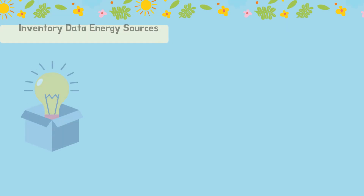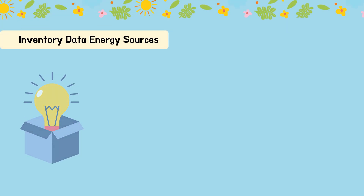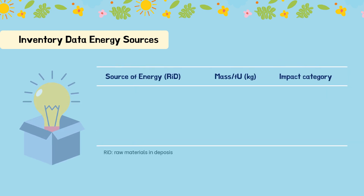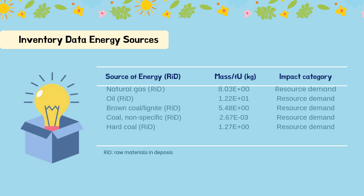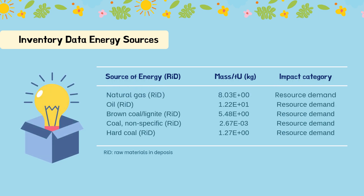Here is the example of inventory data for energy sources, which consists of raw materials in deposits (R, ID). Examples of sources of energy for raw materials in deposits include natural gas, oil, brown coal or lignite, coal non-specific, and hard coal.